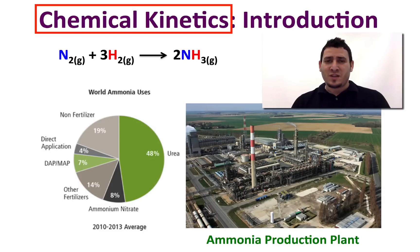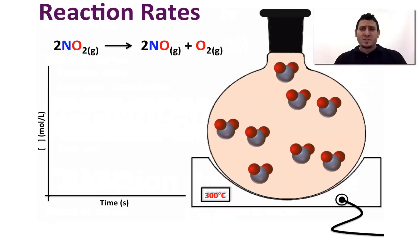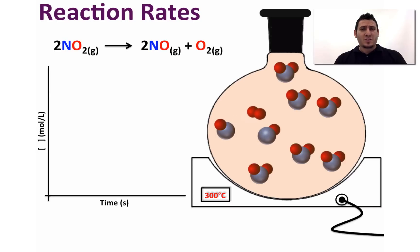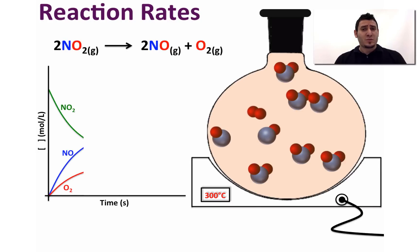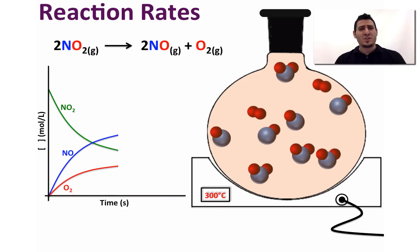The area of chemistry that concerns the reaction rate is called chemical kinetics. Consider the decomposition of nitrogen dioxide into nitrogen monoxide and oxygen. Nitrogen dioxide will react to give nitrogen monoxide and oxygen.